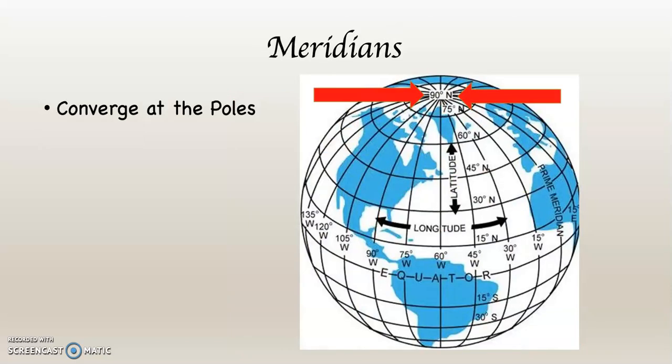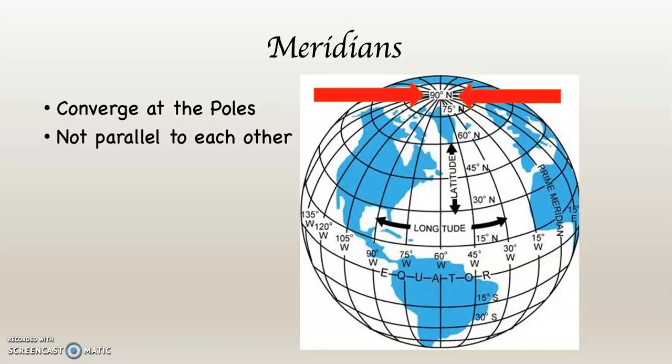See how they're all converging at the poles? They all come up and converge at the poles. Because they are converging at the poles, they're not parallel to each other. If you're at the equator and begin going into the northern hemisphere following two lines of longitude, they get closer and closer until all 360 degrees of longitude — 180 in the western hemisphere and 180 in the eastern hemisphere — all converge at the north pole and at the south pole. So we cannot say that one degree of longitude everywhere on Earth equals 69 miles.